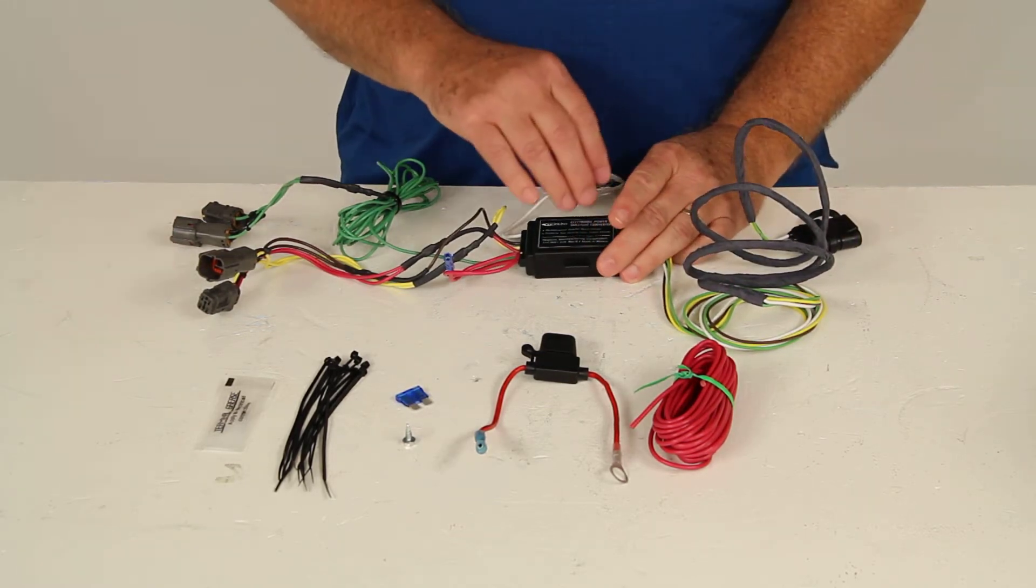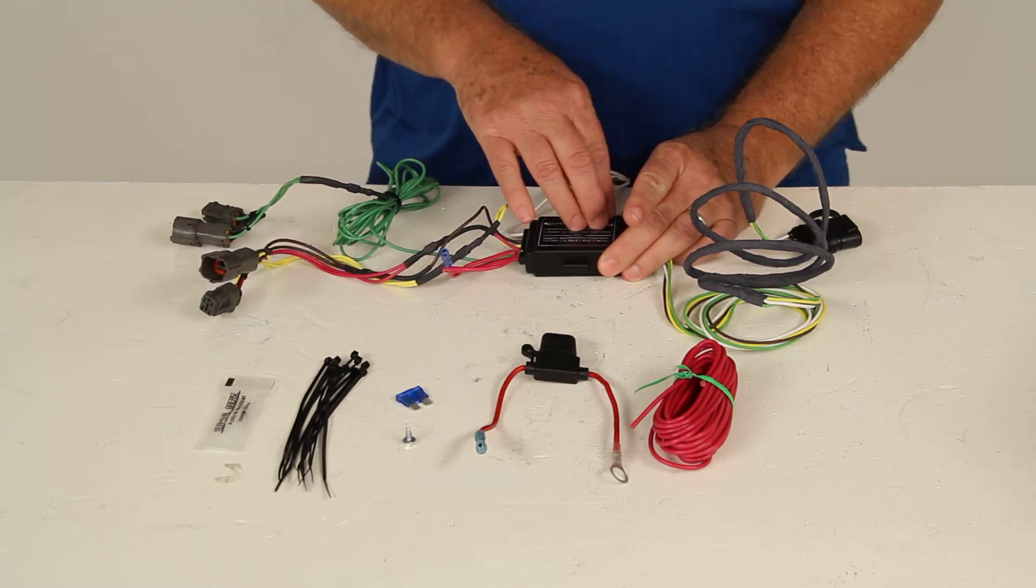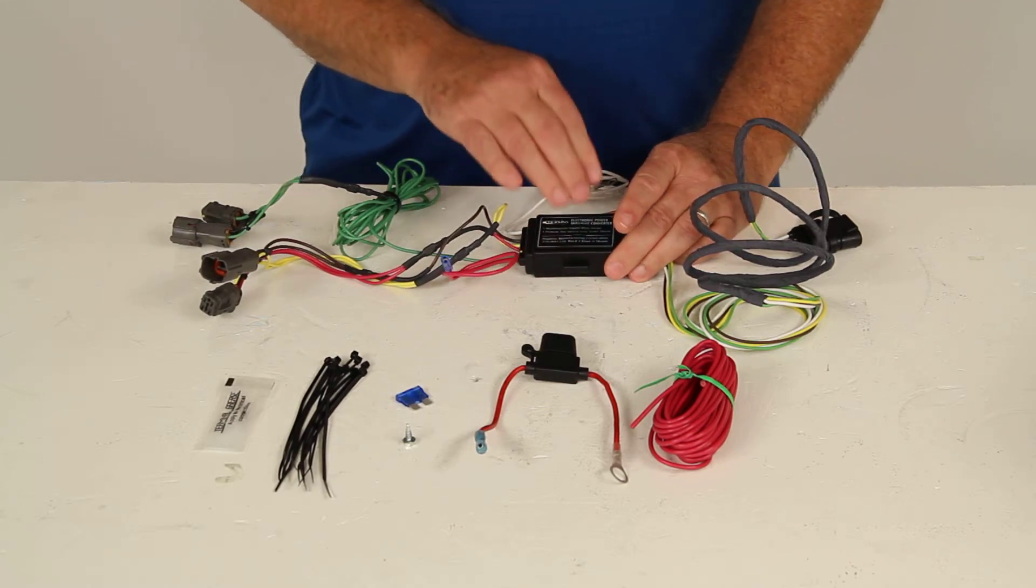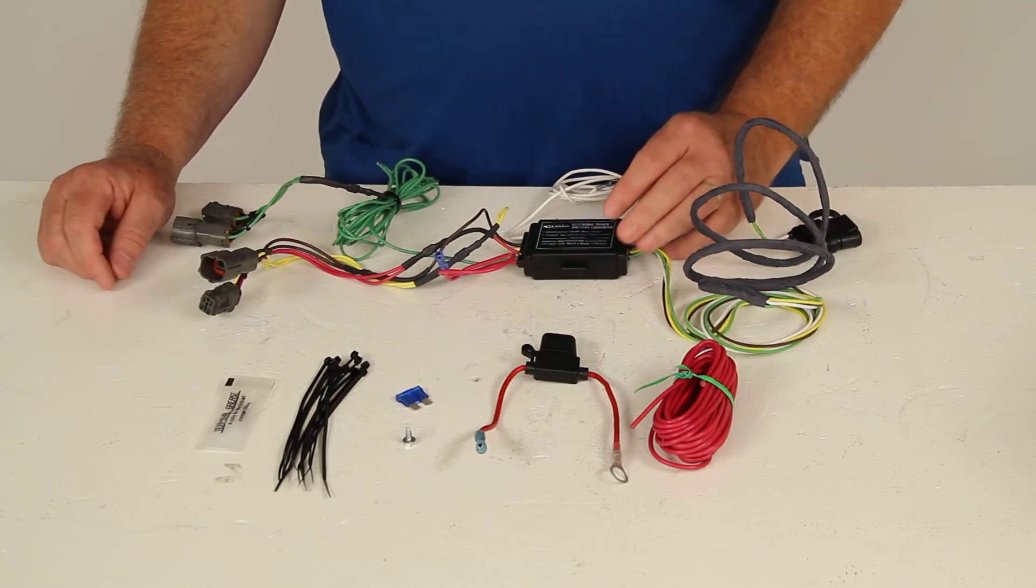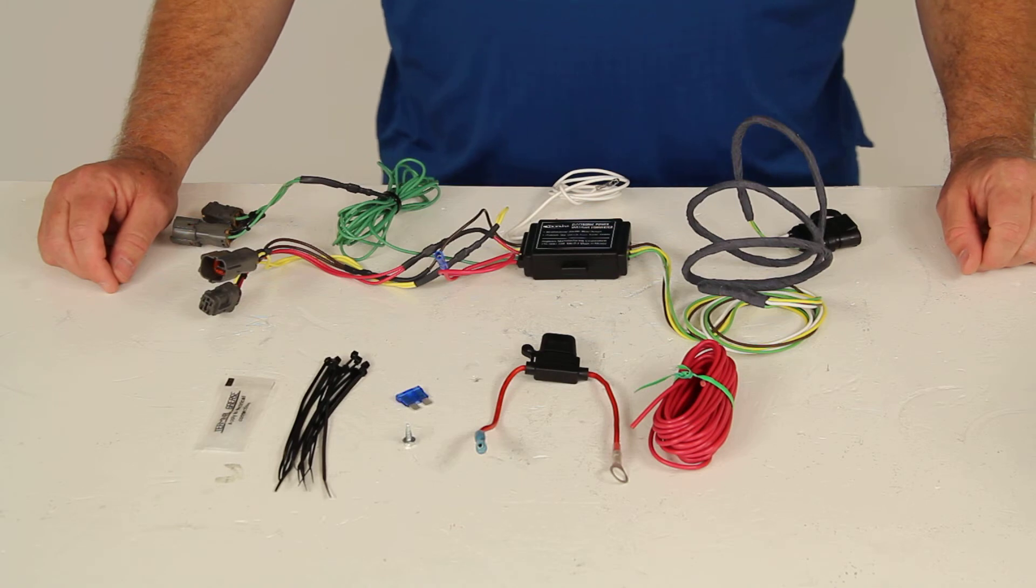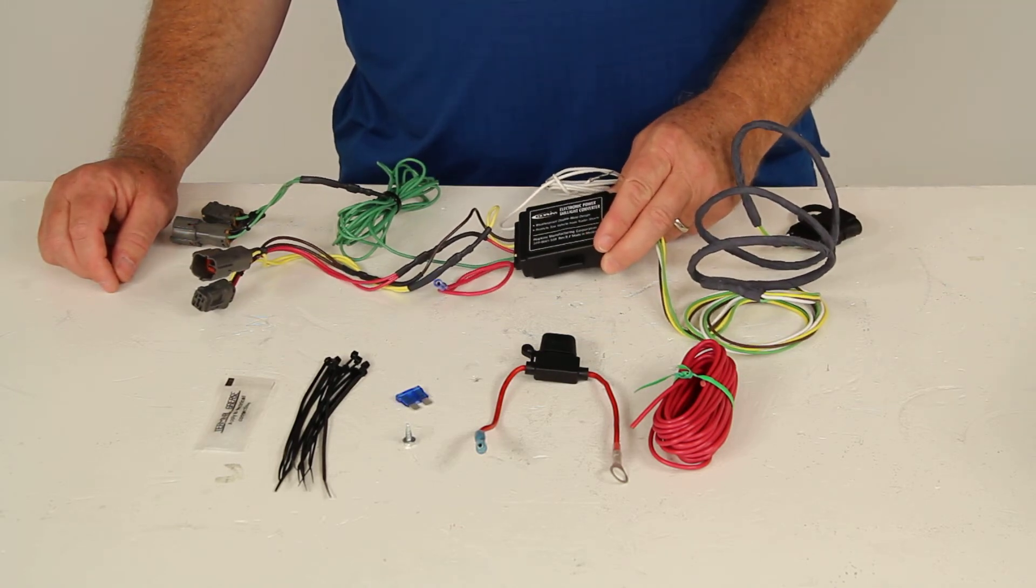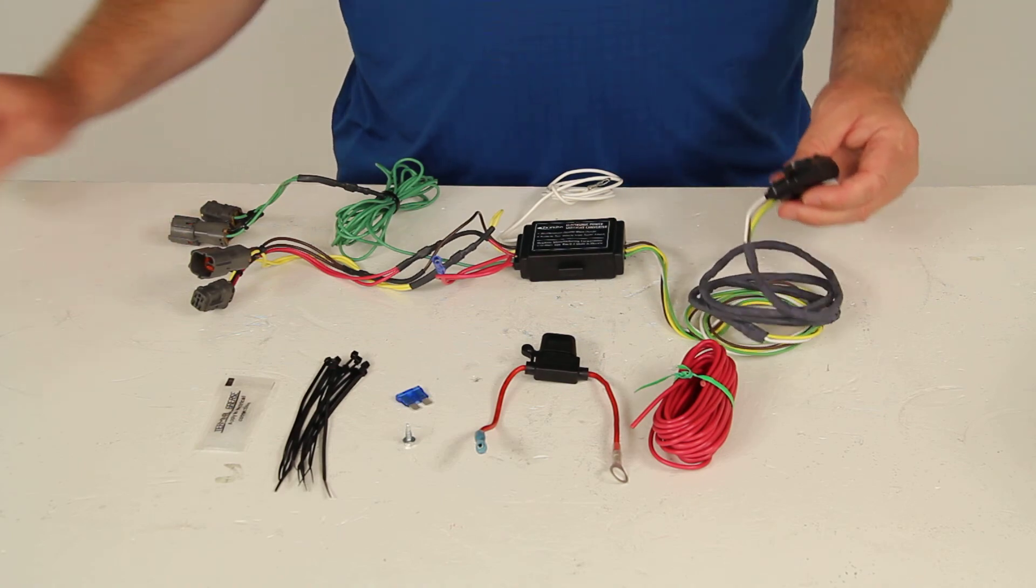Now on this module itself, a few specs on it. The maximum amp it will accept on stop or turn lights is 3 amps per circuit, on the tail lights would be 6 amps. But that should do it for the review on part number HM11143820, the Hopkins plug-in vehicle-specific wiring harness with the four-pole trailer connector.